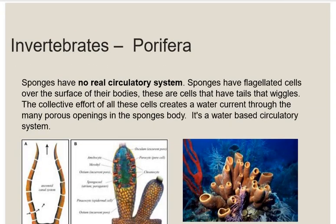Next are poriferans — for example, sponges. In their body, there is no real circulatory system present. Instead, they have flagellated cells that help water move inside and outside the body. Through this water movement, they absorb nutrients and excrete excess waste material. Their circulatory system is essentially water-based.